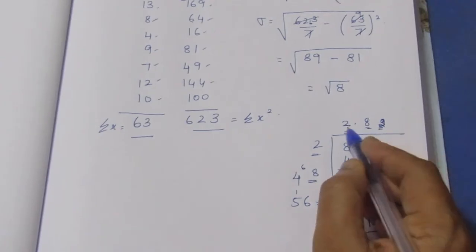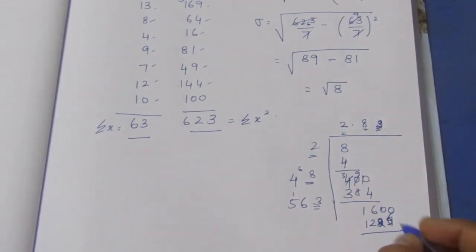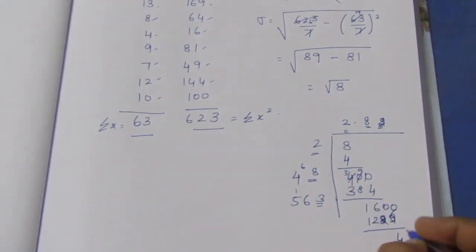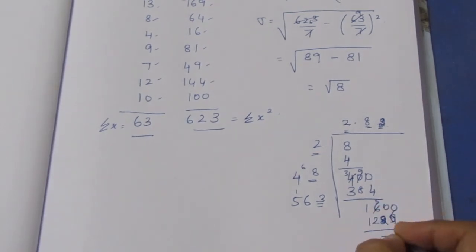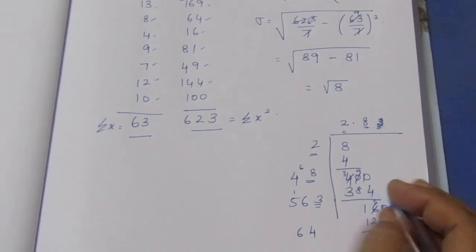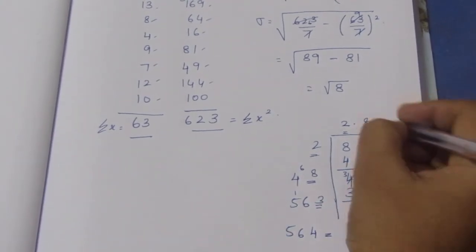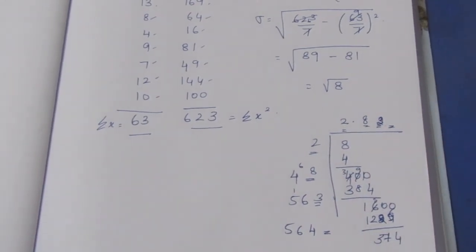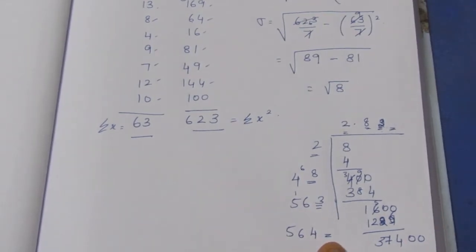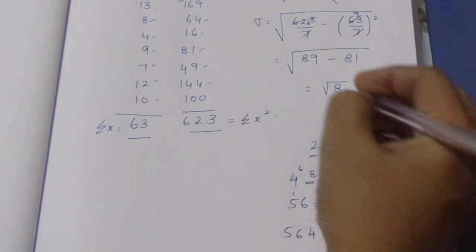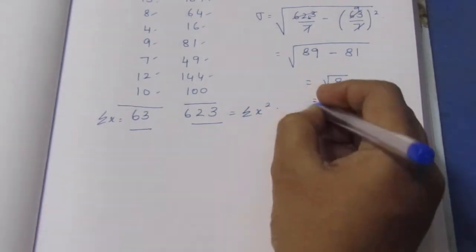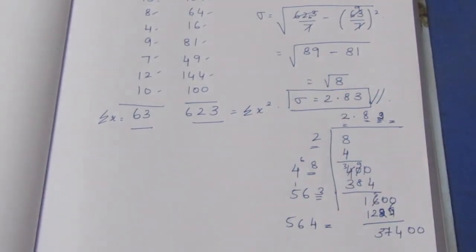If you look at this, the result is 2.82. Looking at the decimal — since the next digit is more than 5, we round off. After rounding, the value becomes 2.83. So the standard deviation value is 2.83. That is the final answer. Thank you.